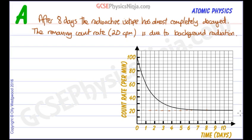This data is including background radiation, so what we need to do before we process this data and calculate the half-life is to take away the background radiation count. That's something you should do in any radioactivity experiment — first measure the background radiation count, then take that away from any measurements you make on your radioactive isotopes. So we'll need to subtract 20 counts per minute from the original data.